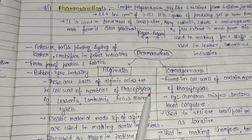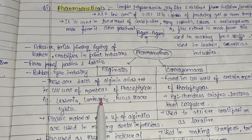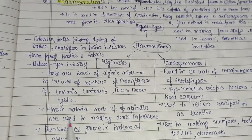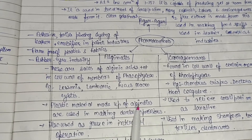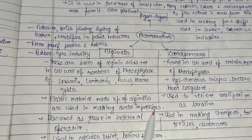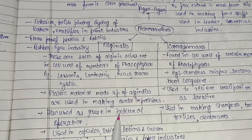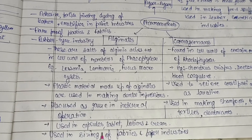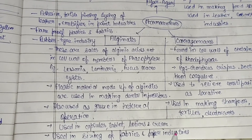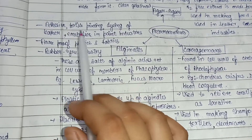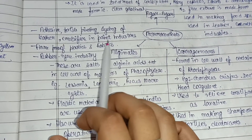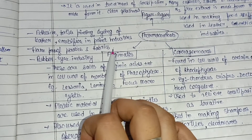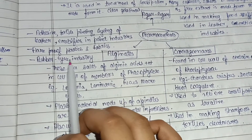Alginates are sources of alginic acids present in the cell walls of Phaeophyceae members — examples include Lessonia, Laminaria, Fucus, and Macrocystis. Plastic materials made from alginates are used in dental impressions and as gauze in internal operations. They are used in capsules, tablets, lotions, creams, sizing of fabrics and paper, adhesives, textile printing, tanning of leather, as emulsifiers, and in paint industries.